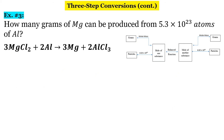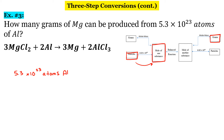In the third example, it says: how many grams can be produced from 5.3 times 10 to the 23rd atoms? So we're given particles this time, and we want to go to grams. Always start with what you're given: 5.3 times 10 to the 23rd atoms of aluminum. To take those atoms and turn them into moles of aluminum, we're going to use Avogadro's number: 6.02 times 10 to the 23rd atoms of aluminum in one mole of aluminum.